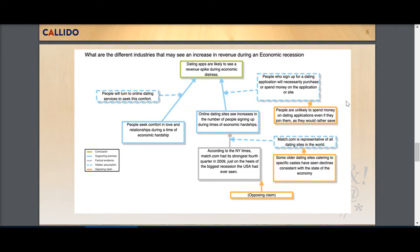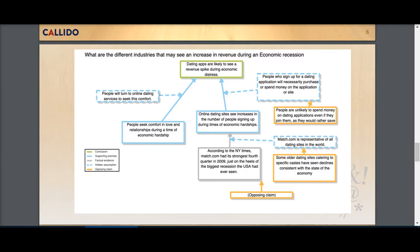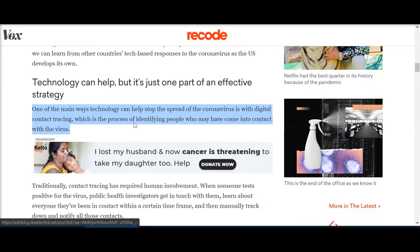Now you know the anatomy of an argument map, let's look at how we can use the browser extension to build your own argument map. You launch it from your browser and label it whatever you like, and as you start looking at sources on the internet...